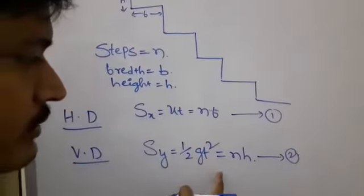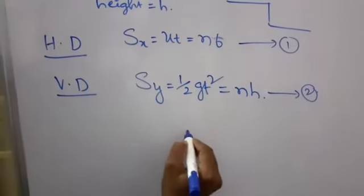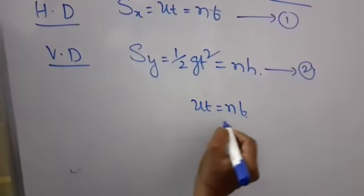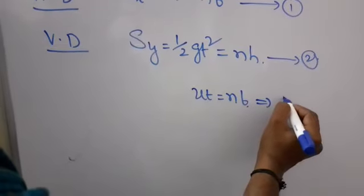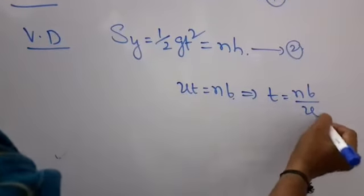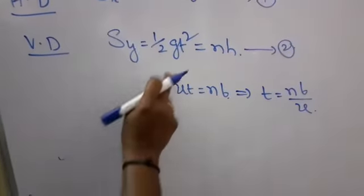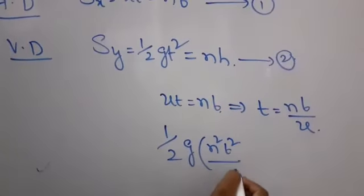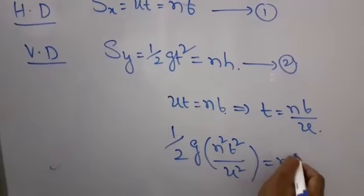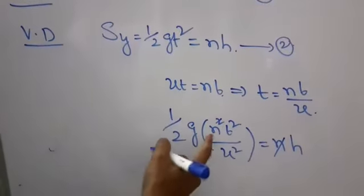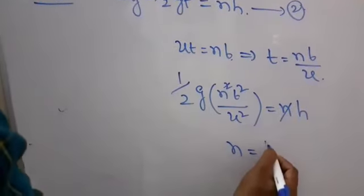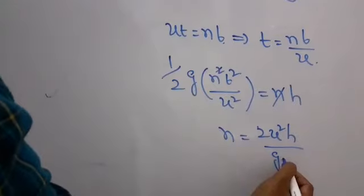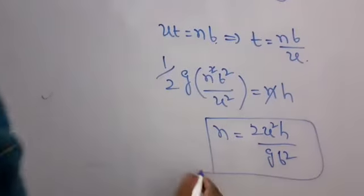From these expressions we calculate the number of steps. From Sx: U·T = N·B, so T = N·B / U. Substituting into the vertical equation: half into G into (N·B / U)² = N·H. After N cancels, the number of steps N = 2·U²·H / (G·B²).